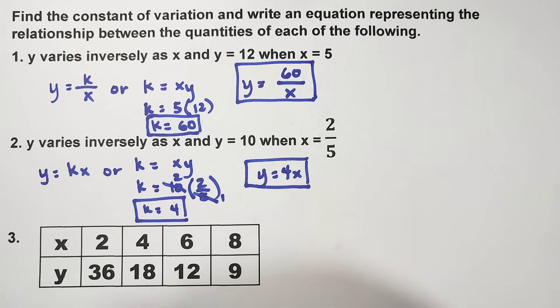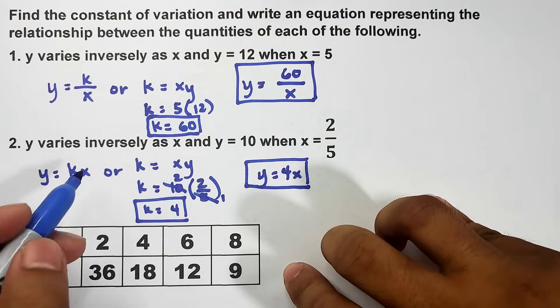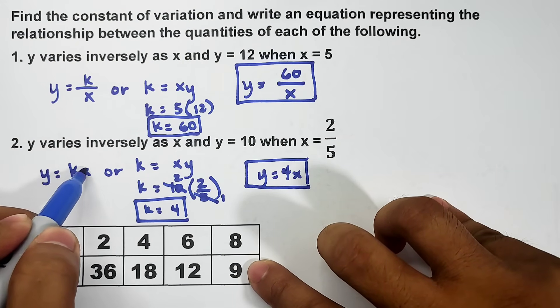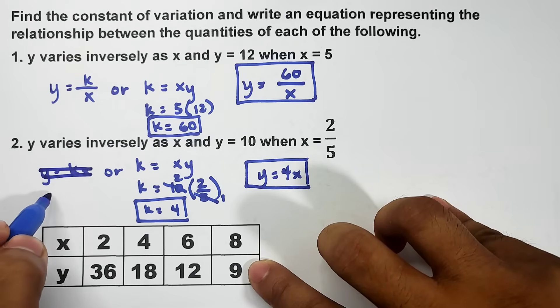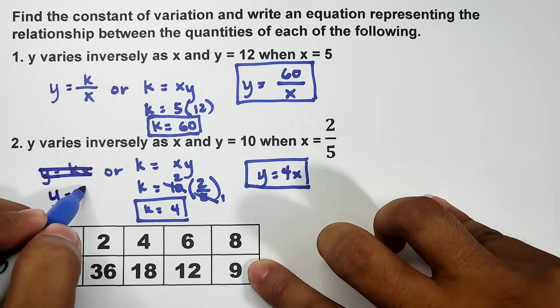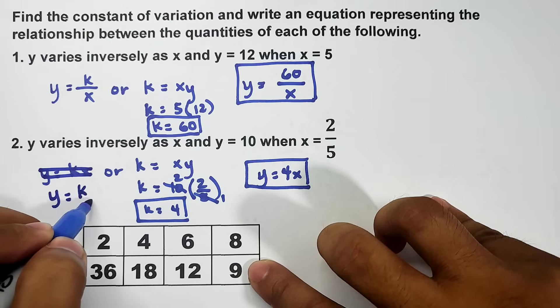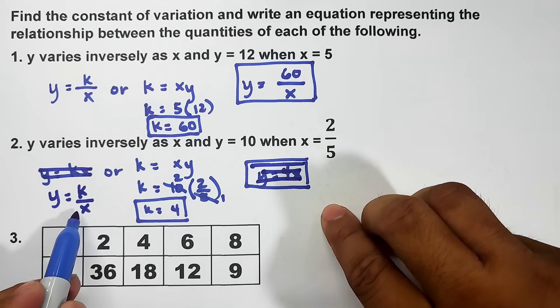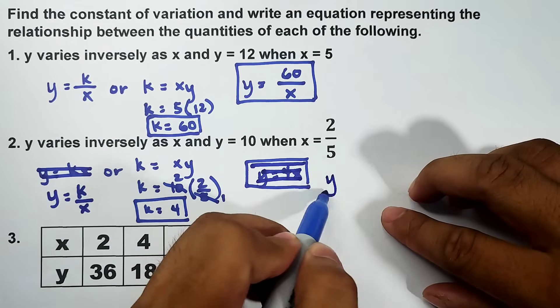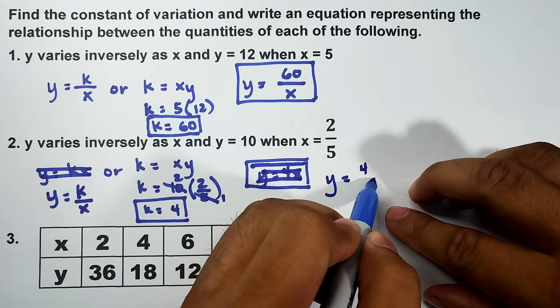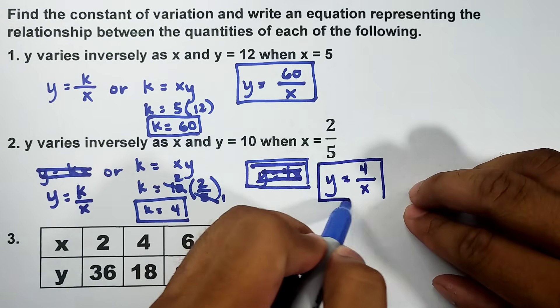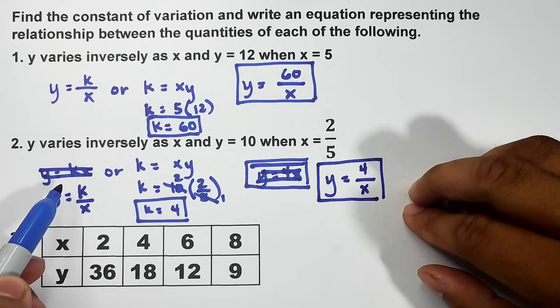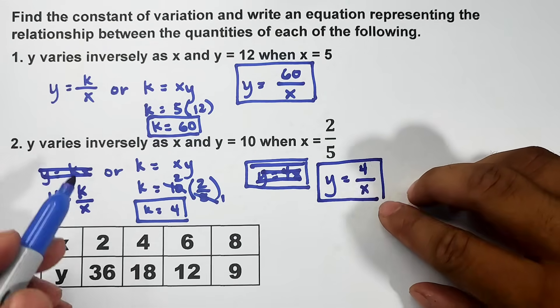By the way guys, I have a correction here. This one must not be y equals kx. This should be y equals k over x. I'm going to erase this. Meaning this one is also incorrect. We will change it to y equals 4 over x. This is the equation of variation. I got confused - the first equation was direct variation. This is the correct answer here.